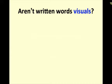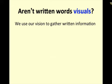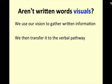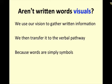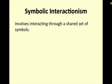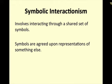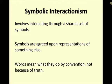Aren't written words visuals? Technically yes, because you gather the information using your vision — but then we immediately transfer it to the verbal pathway, because words are simply symbols. They are not actually what is; they are something that represents something else. Which brings me to symbolic interactionism. Symbolic interactionism involves interacting through a shared set of symbols. That's what humans do — we use symbols to interact, to get our meaning about things. We attach meaning based on symbols. They are agreed-upon representations of something else.